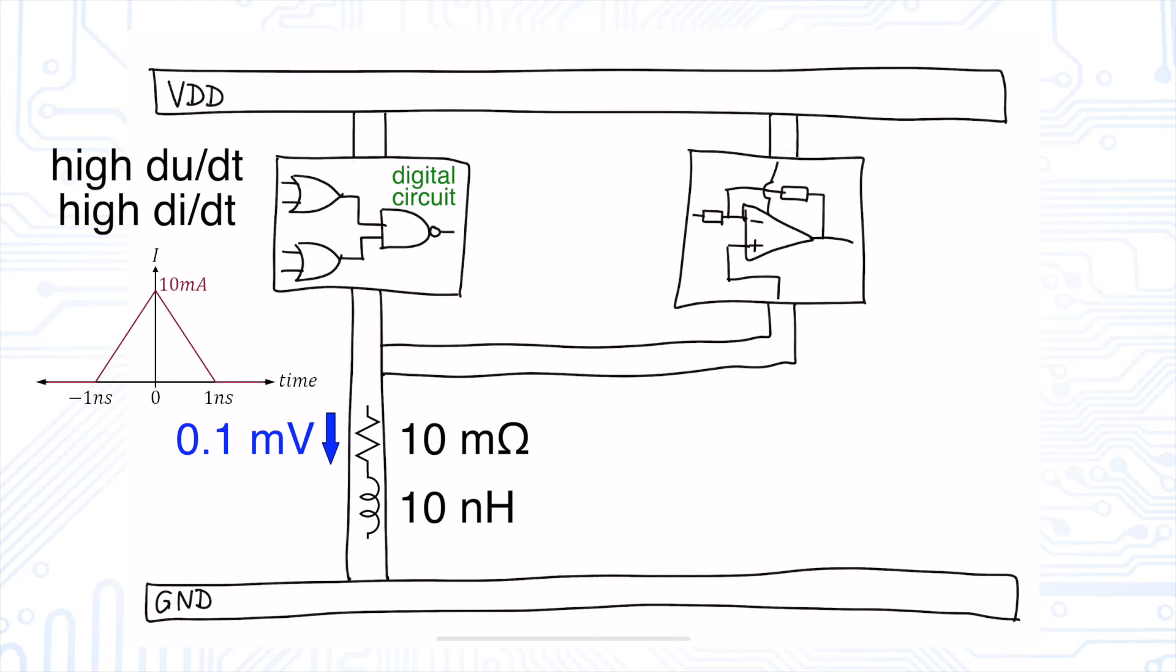However, at the inductor there is a voltage drop of 100 millivolts. We cannot neglect that because the question you have to ask yourself is, does our analog circuit still have a good ground potential? The answer is no.